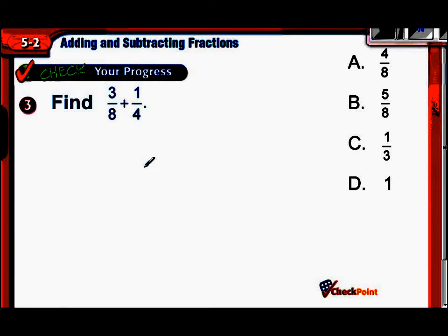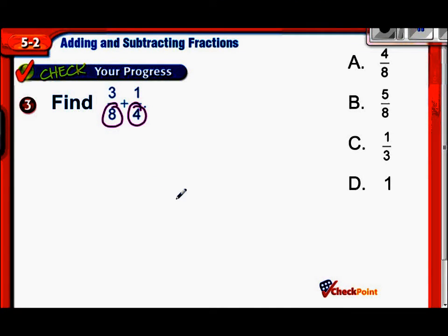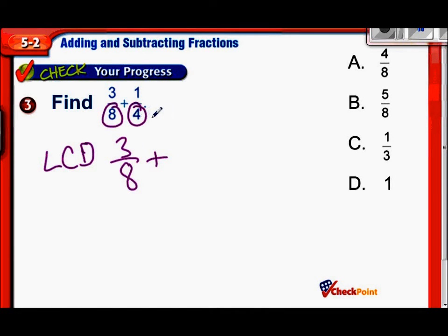New one, three-eighths plus one-fourth. All right, well now we're adding and subtracting fractions with unlike denominators. So the first thing we need to do is figure out what that common denominator would be. So we have an eight and we have a four. What is our LCD? Our least common denominator. In the case of eight and four, the smallest number that eight and four both go into is their least common multiple would be eight. So we have three-eighths plus, well, if we're going to make fourths into eighths, we're going to multiply the numerator and denominator by two. So that would end up with two-eighths.